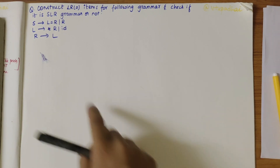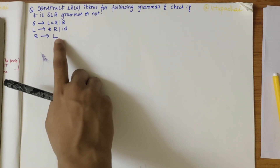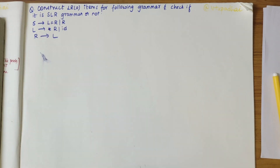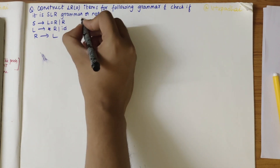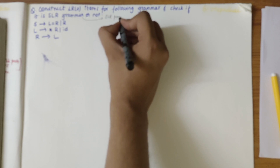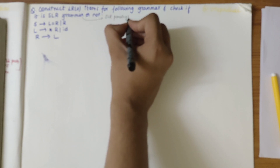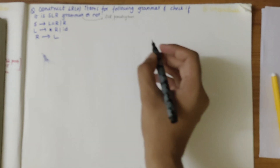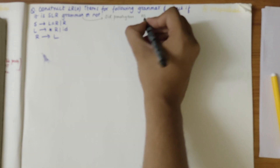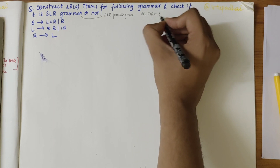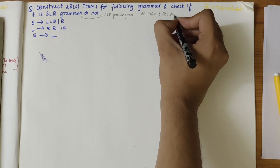In this video, we will be looking at the given grammar and checking if it is SLR or not. In order to check if the grammar is SLR, we need to construct an SLR parsing table. Before we proceed, our first step is to find the FIRST and FOLLOW of the non-terminals.